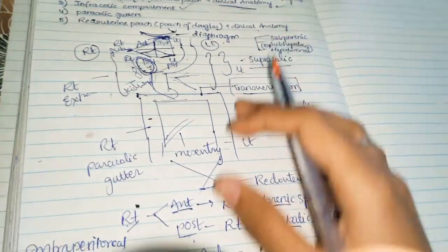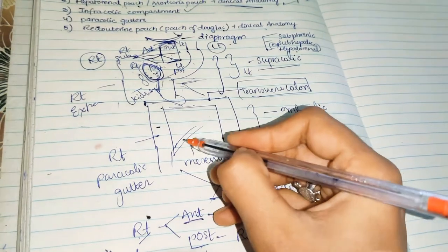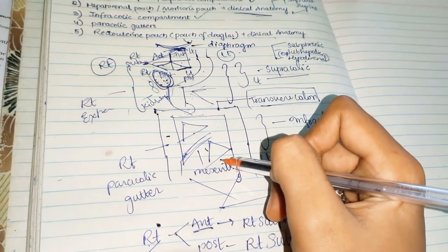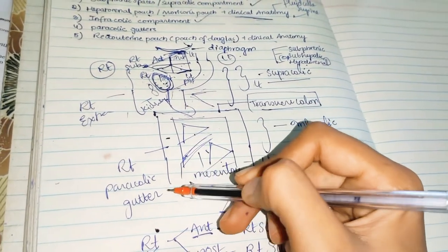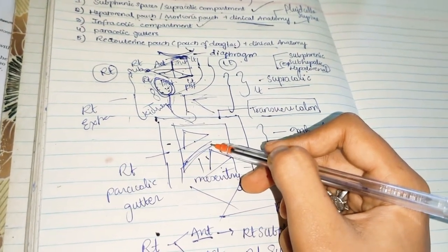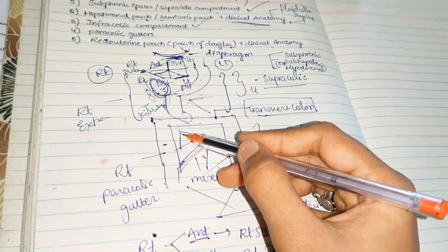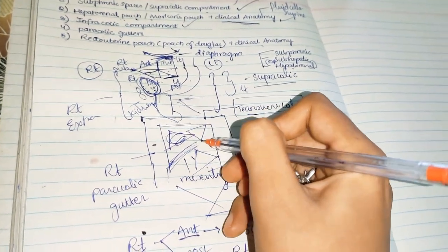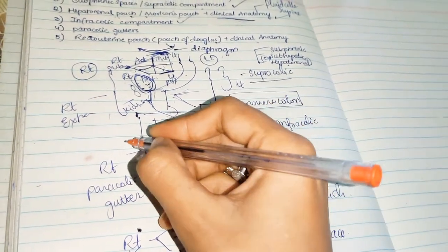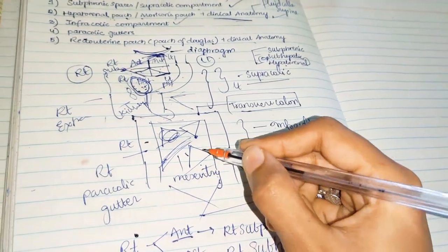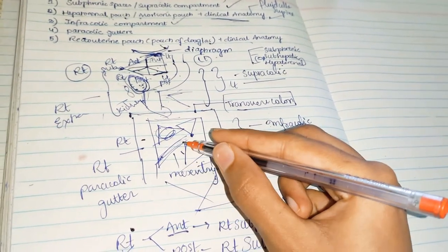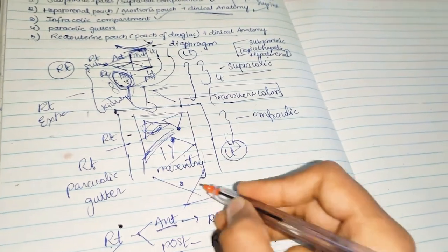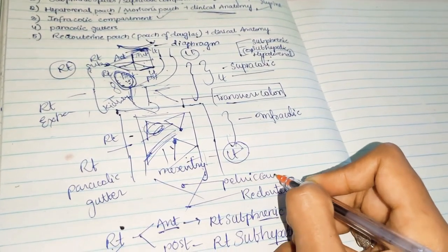Next we will discuss the infracolic compartment. The infracolic compartment is divided by the mesentery into an upper triangular part and a lower triangular part. The right infracolic compartment lies between the ascending colon and the mesentery, below the transverse mesocolon — it is triangular in shape with the apex directed downwards. The left infracolic compartment lies between the descending colon and the mesentery, and it is also triangular but with its apex directed upwards. Inferiorly, it opens into the pelvis.